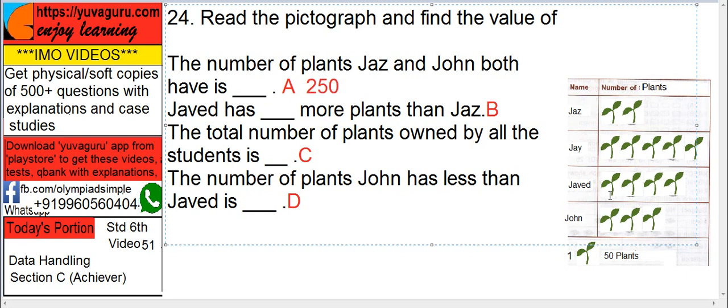Javed has more plants than Jazz, 4 and 2, so 2, 2 into 50, 100.